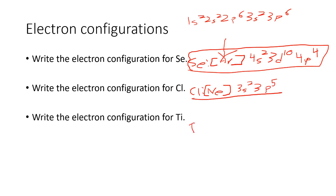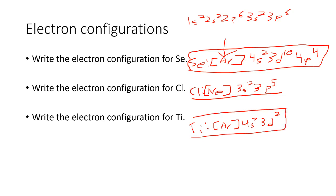For titanium (Ti), its noble gas is argon. Similar to Se, we start after argon, but now we have only four electrons left to draw: 4s² 3d². As a reminder, while there are exceptions to orbital filling rules for transition metals, you don't need to memorize those for this course — just be able to identify them if given the configuration. So 4s² 3d² is correct here, and you don't need to worry about adjusting it further.